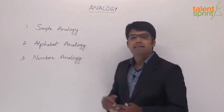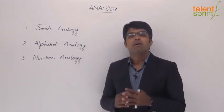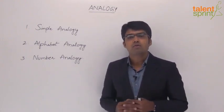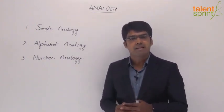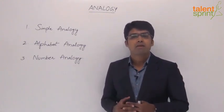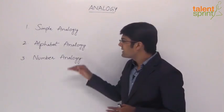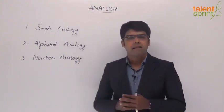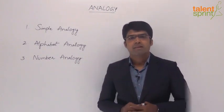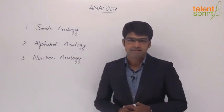In the second category, alphabet analogy, questions are based only on the letters of the English alphabet. Here we need to work on the positions of the letters as per the English alphabet to find the analogous pair or complete the second pair. In the third category, number analogy, the questions are all based on different numbers. Let us now take a few examples from each of these categories.